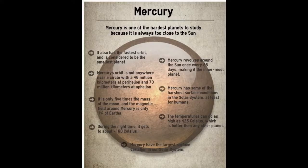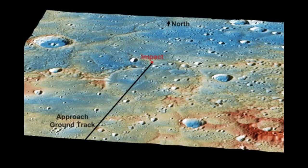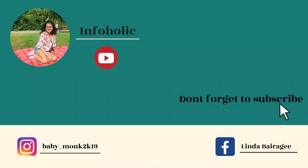The MESSENGER spacecraft fundamentally changed our understanding of Mercury during its four-year orbital exploration of the planet, returning nearly 300,000 photographs and a wealth of information. The mission ended as expected on April 30, 2015, when the probe slammed into the planet's surface at about 8,750 miles per hour, creating a new crater on Mercury. Who knows who it will be named after?